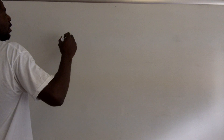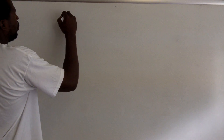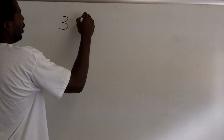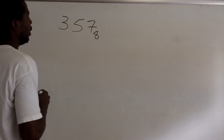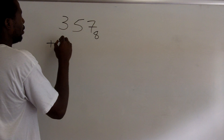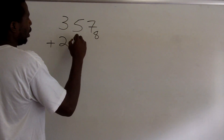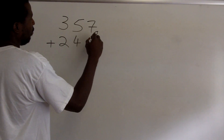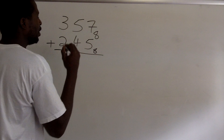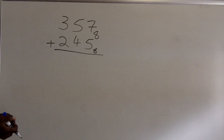I want to now take a look at adding and subtracting in different bases. Let's take the number 357 base 8 and add that to the number 245 base 8. In order to add base 8 numbers, what you have to remember is that anytime you get a number when you add that is larger than or equal to the base, that number is actually a base 10 number.